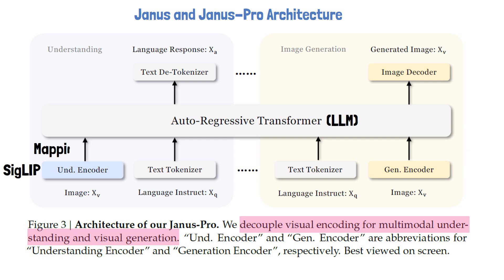These representations are linearly mapped to the input space of the large language model. Similarly, for image generation, Janus uses an existing encoder from LlamaGen, an autoregressive image generation model. This is a vector quantization tokenizer that converts an image to a list of IDs, each associated with a predefined vector. These vectors are mapped to the input space of the LLM using a trained module.